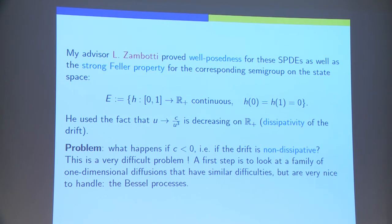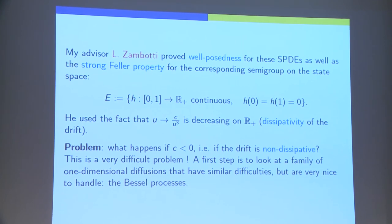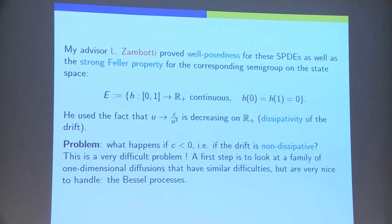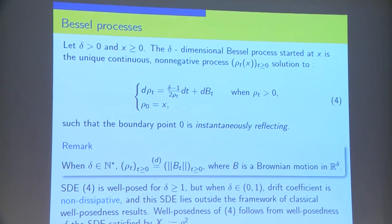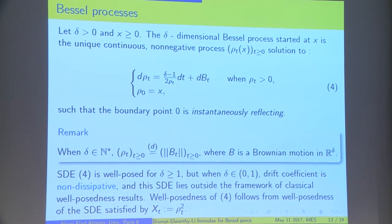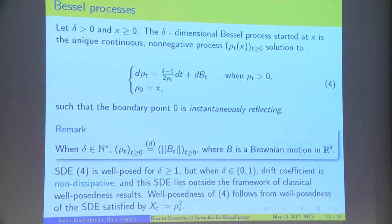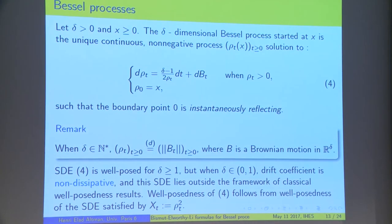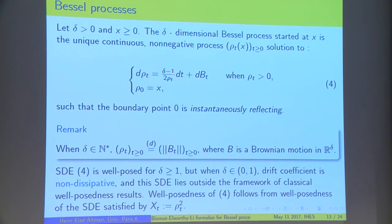This problem is very difficult. And, I did not, I still don't have any solution. So, I said, let's look at some one-dimensional example, which has similar difficulties, but which is easier to handle. And, this example is the example of Bessel processes. Bessel processes are the following processes: non-negative processes with real value, which satisfies this SDE, with a drift term in 1 over X.